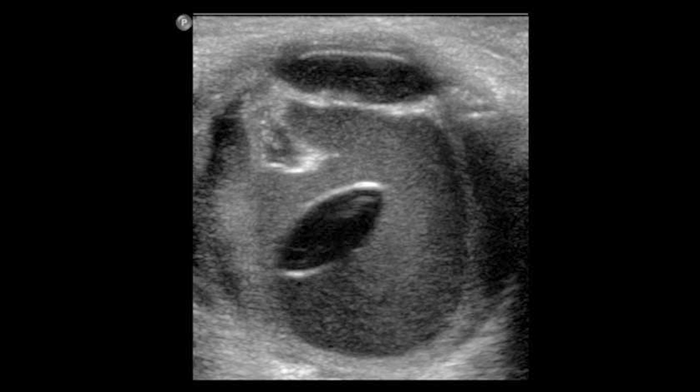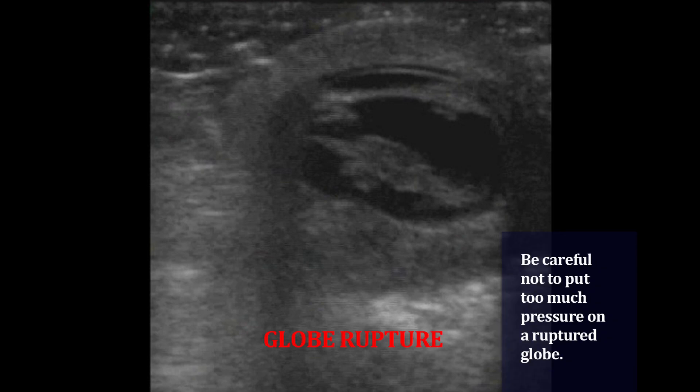Let's look at some abnormal images. Here we have a fairly obvious lens dislocation, where the lens has been torn away from the ciliary body. Here's an image of a globe rupture. You'll notice that it isn't a nice round globe shape, and that the anterior chamber has almost completely collapsed.